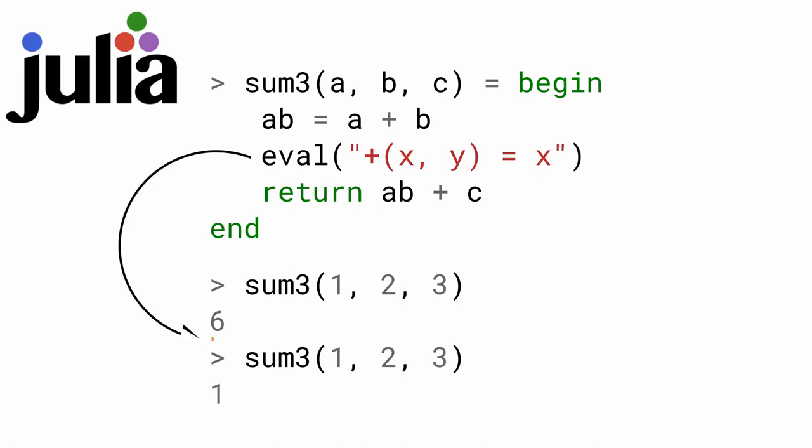It's because the eval from the first call to sum3 appears to take effect only after sum3 returns to the top level. Similarly to some other languages, eval in Julia executes in the top level environment, redefining plus globally.